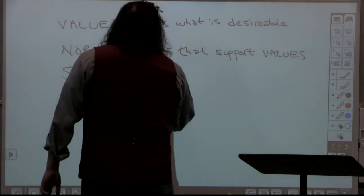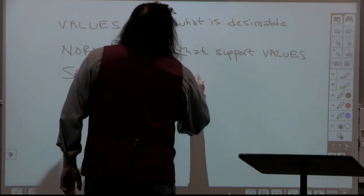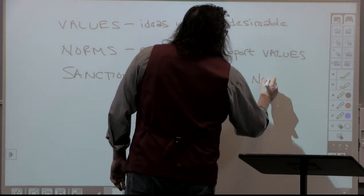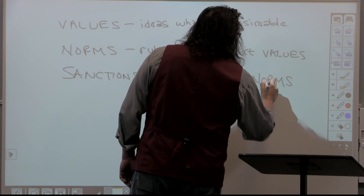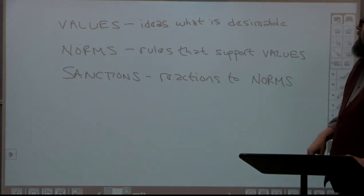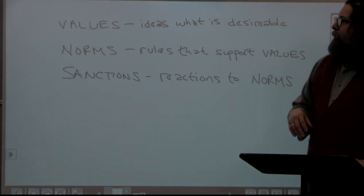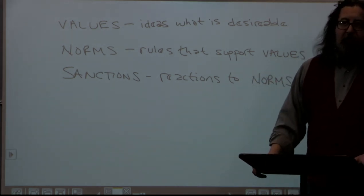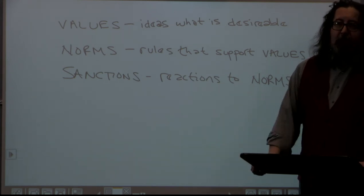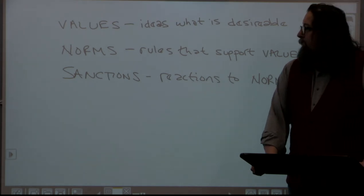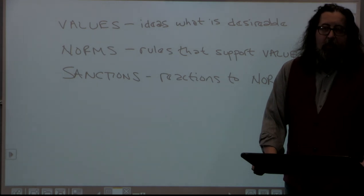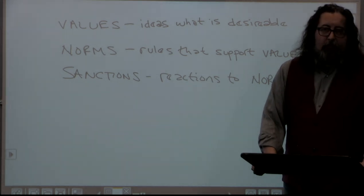Sanctions are basically society's reactions to norms. These three terms are presented together because of their close interrelation. There are rules in society that support values, and when we follow those rules we get positive sanctions — another word for that is rewards. When we break or violate norms, we are usually given negative sanctions — another word for that is punishments.